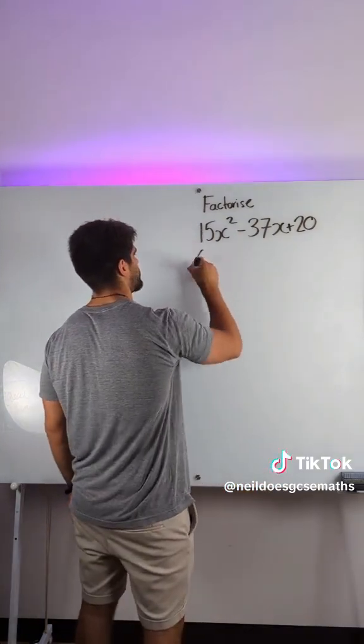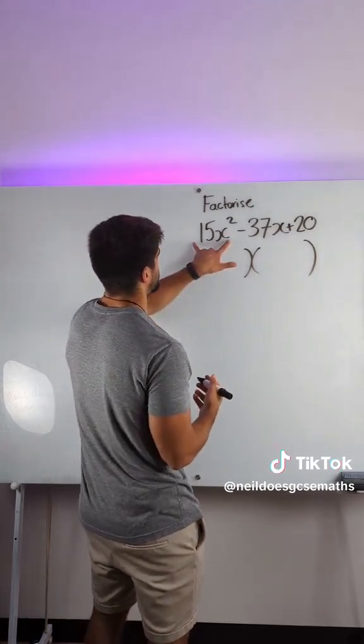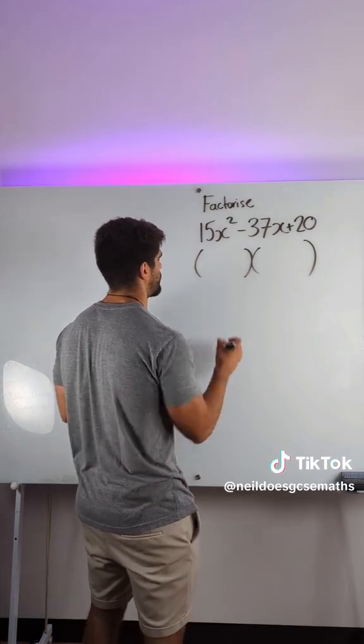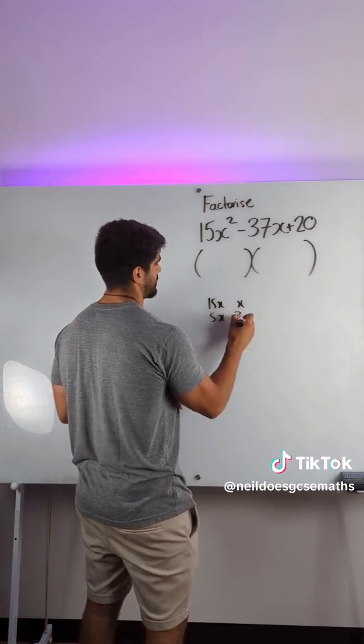How do we factorise? We use two brackets. Now we're thinking, what multiplies to give you 15x squared? We have options. We have 15x and x, and we have 5x and 3x.